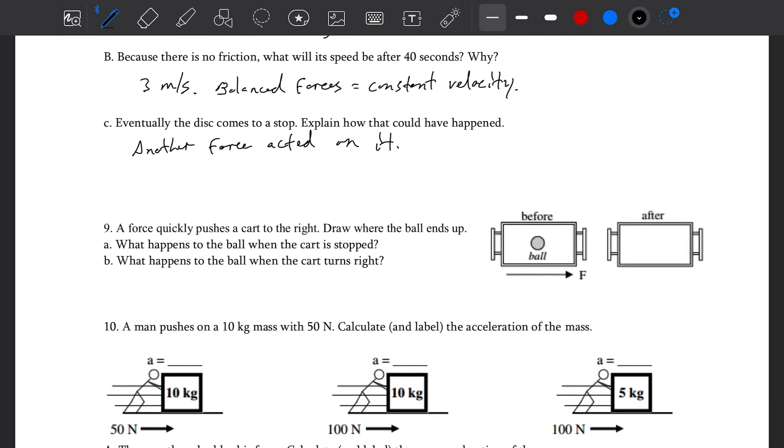A force quickly pushes a cart to the right. Where does the ball end up? Just imagine you have a ball in the center of a tray and you shove the tray. You can imagine what the ball is going to do. But why does the ball do that? We know objects at rest want to stay at rest. And objects in motion want to stay in motion. Well, this ball is right now, it's at rest. It doesn't want to move. You shove that tray forward, it's going to roll back. It's trying to stay where it was. So the ball, because of inertia, the reluctance to change its motion, wants to stay in place. It will, in the reference frame of the cart, move in the opposite direction of the change in motion.